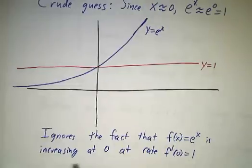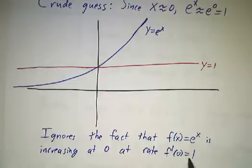But it does change. And in fact, we know the rate at which it's changing. The rate at which it's changing is the derivative and f prime is 1.